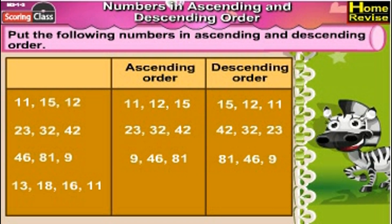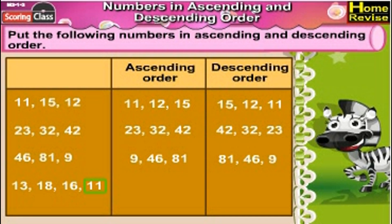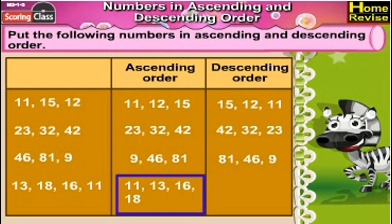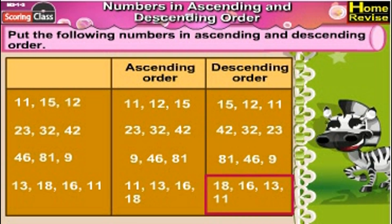Next set: 13, 18, 16, 11. Now which one is the smallest number? That is 11. The remaining numbers are 13, 18, 16. Out of these, which one is the smallest number? 13. So we are left with 18 and 16, and the smallest between them is 16. So the ascending order is 11, 13, 16, 18. The descending order would be 18, 16, 13, 11.